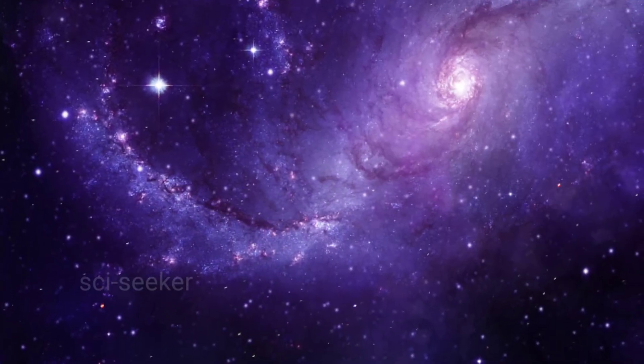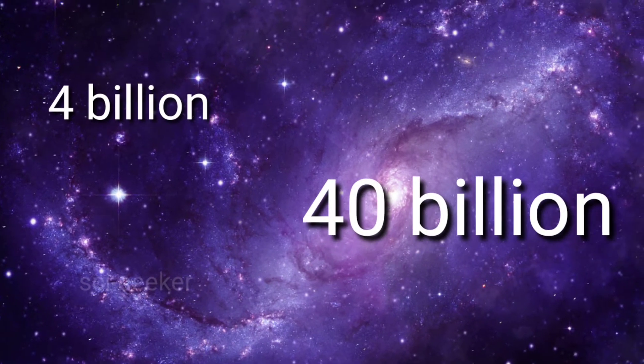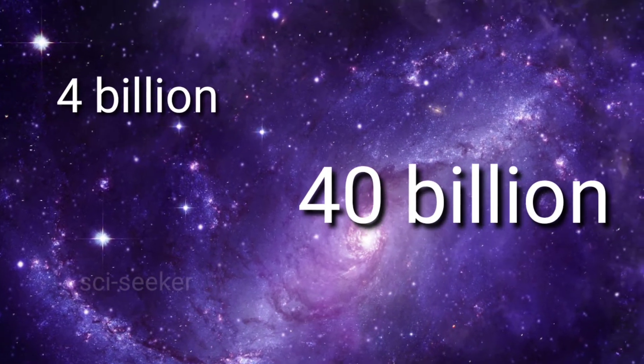Scientists estimate that in our galaxy, somewhere between 4 billion to 40 billion planets are in the habitable zone around their stars.